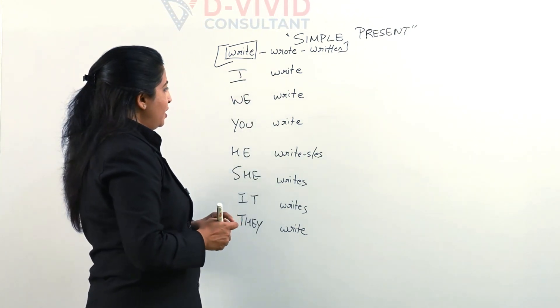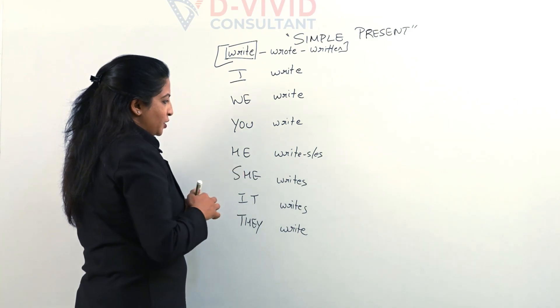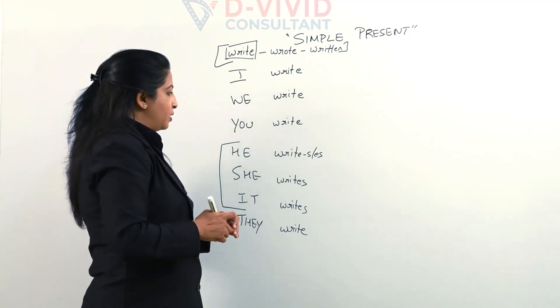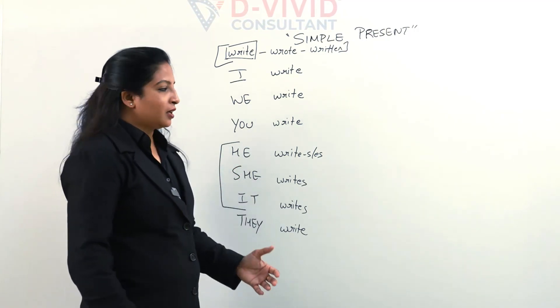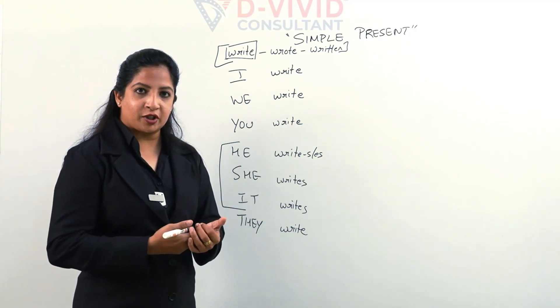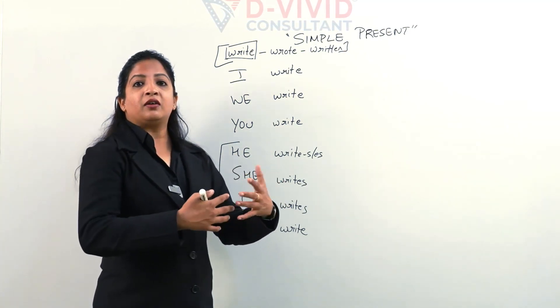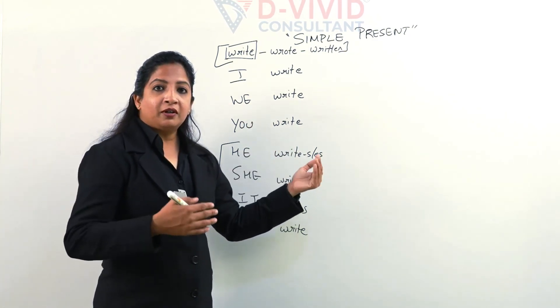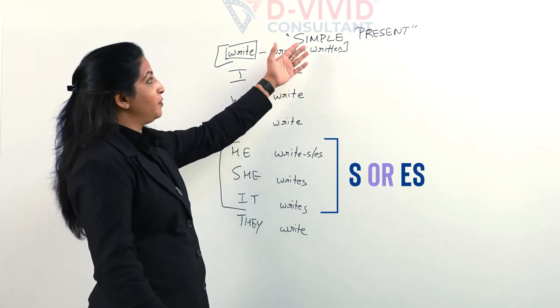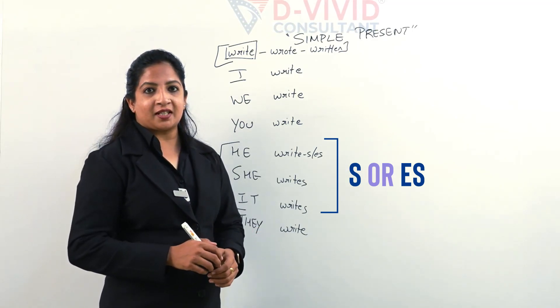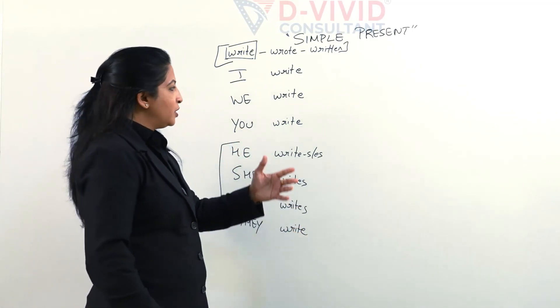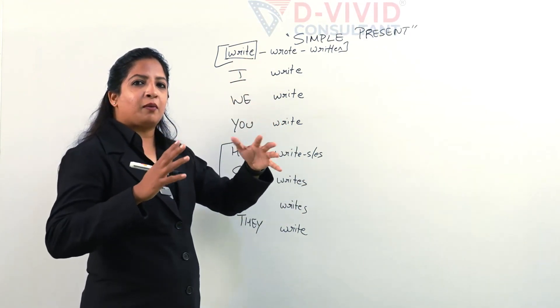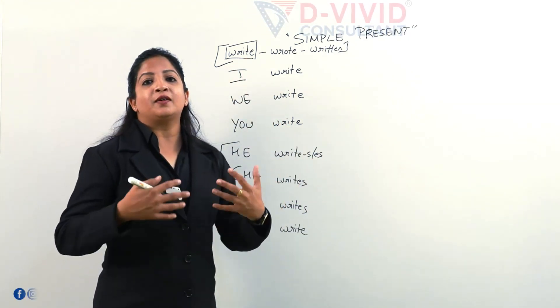Now when we have specifically he, she and it, it means if we are using the name of a person or something, animal or place, after the verb we use s or es when we are working with simple present tense. Apart from these words, we use the first form itself without s or es.